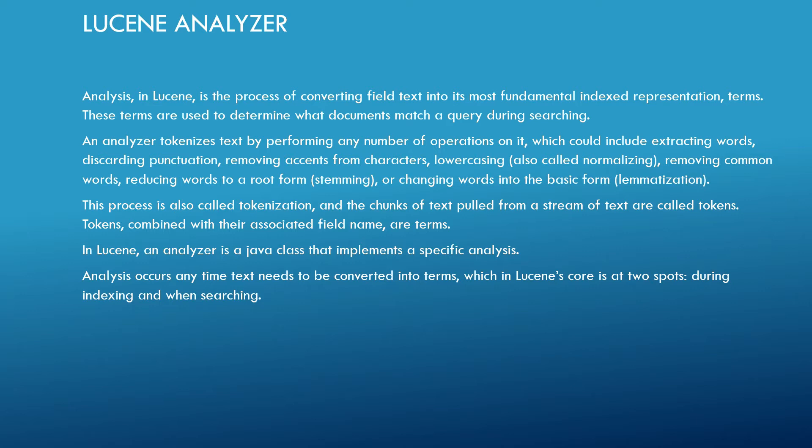An analyzer tokenizes text by performing any number of operations on it, which could include extracting words from the field, removing accents from characters, lowercasing, removing common words, reducing words to a root form, or changing words into a basic form. This process is called tokenization, and the chunks of text from a stream of text are called tokens.